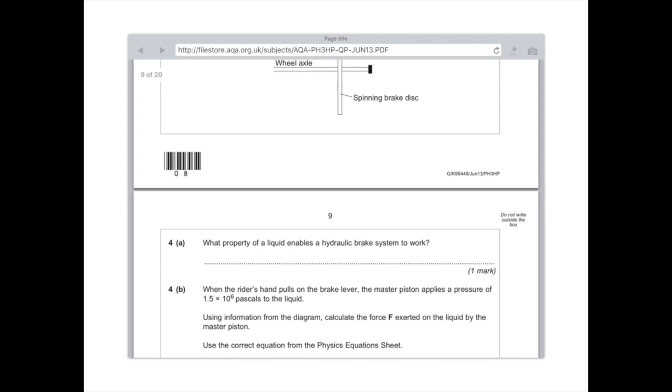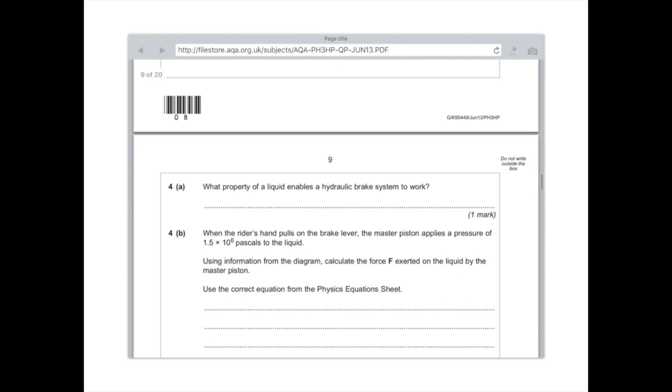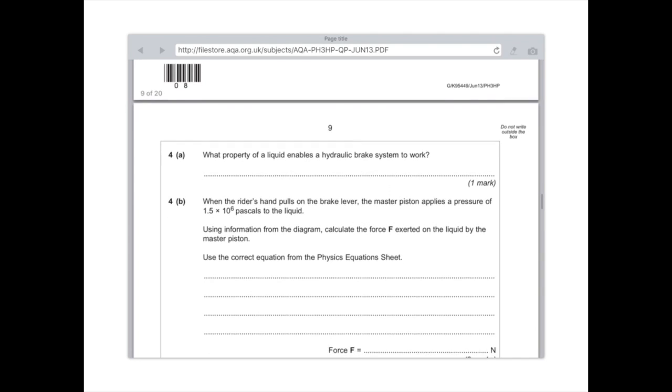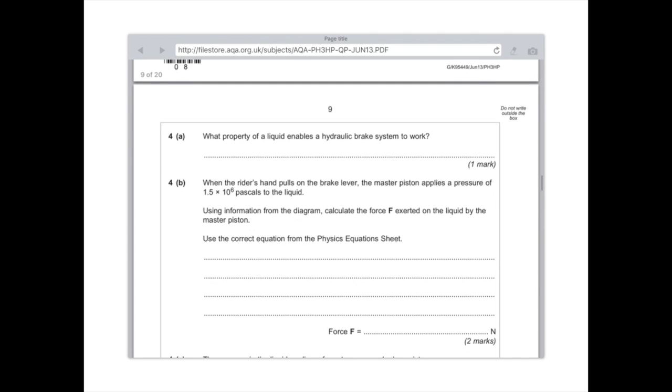What property of a liquid enables a hydraulic brake system to work? Similar answer from the first question I answered is the liquids are virtually incompressible. When the rider's hand pulls on the brake lever, the master piston applies a pressure of 1.5 times 10 to the 6 pascals to the liquid. Use information from the diagram. Calculate the force exerted on the liquid by the master piston. Right, okay, so I'm going to have to write it down here. Equation again. I always do this. I'm incapable of just remembering them.